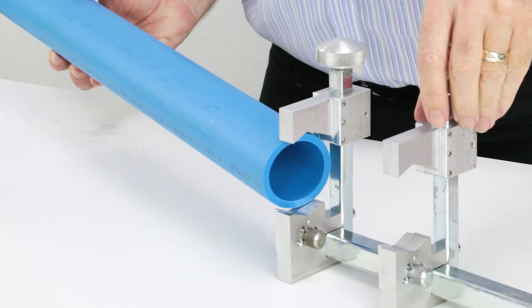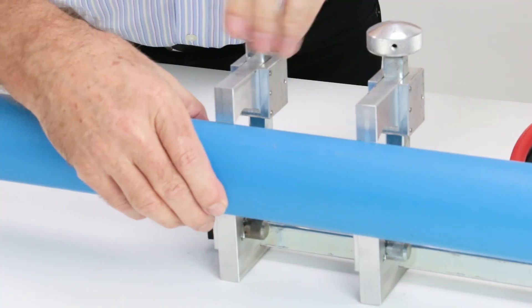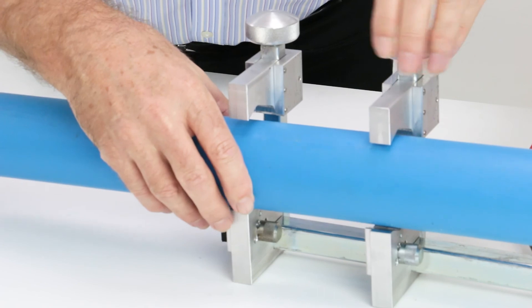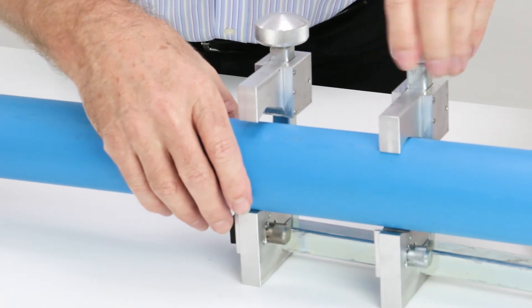Skipping ahead, we're now going to secure the pipe in the clamps. These will remain like this for the rest of the welding process until the pipe has fused and cooled entirely, to ensure the strongest and straightest joint.